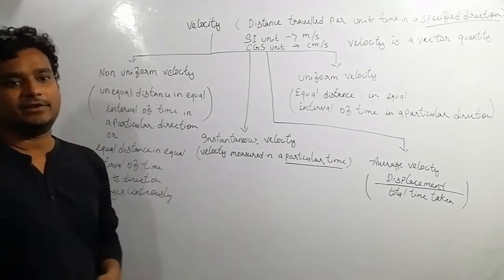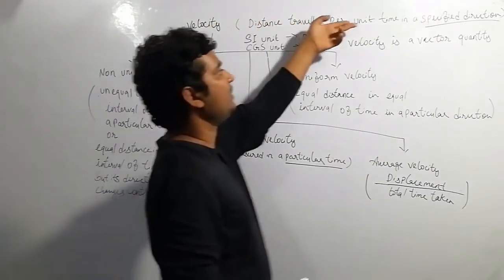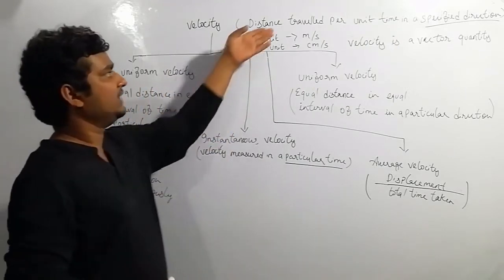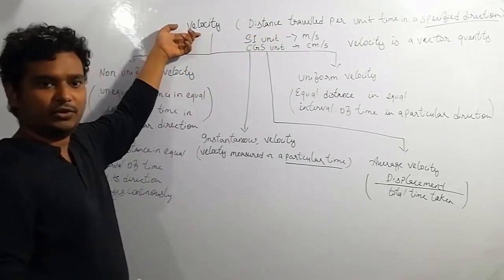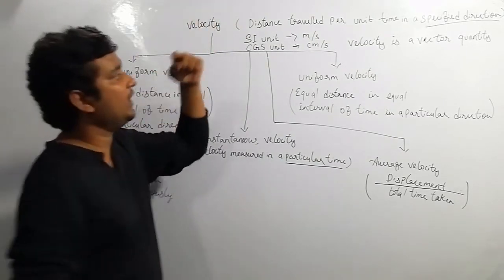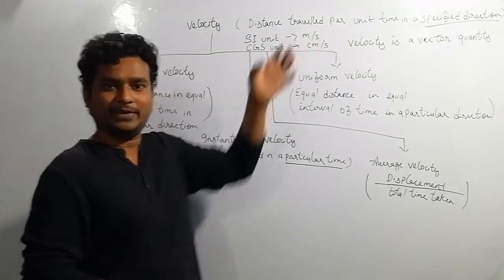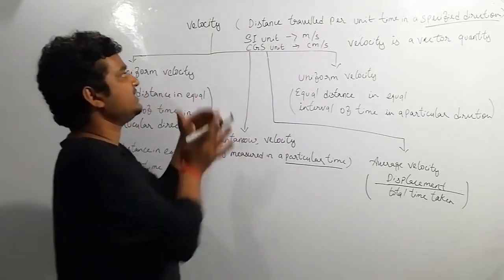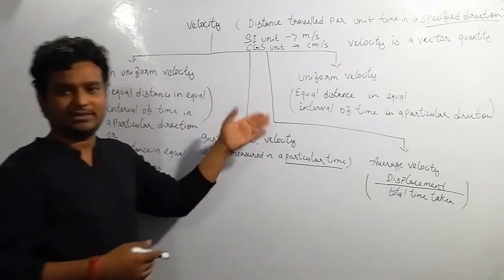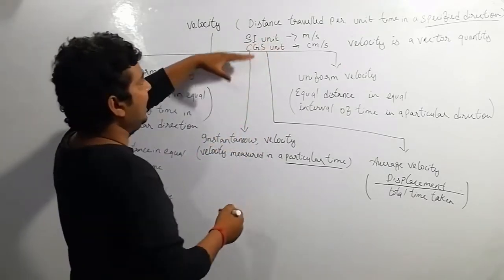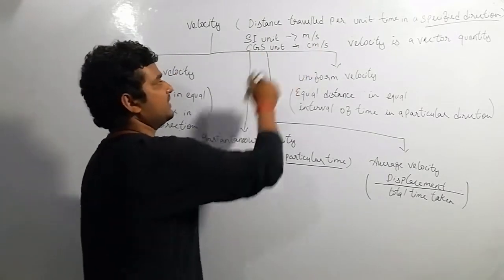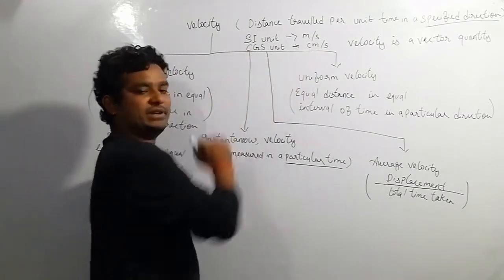Now we are coming to velocity. Velocity is the distance traveled per unit time in a specified direction. It is the same as speed, but direction is included. We state the magnitude along with the direction. The SI unit of velocity is meter per second, and the CGS unit is centimeter per second.